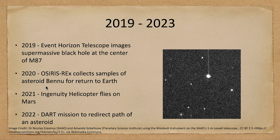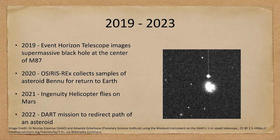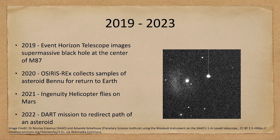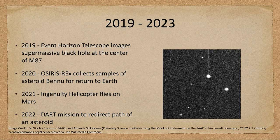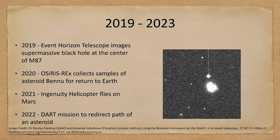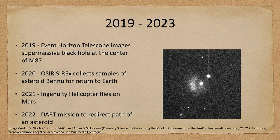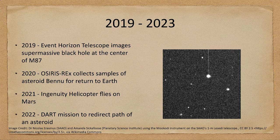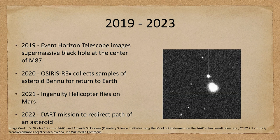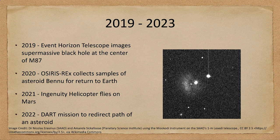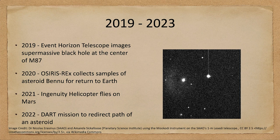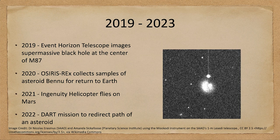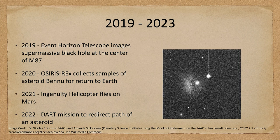In 2022, we had the DART mission — an impact on the satellite of an asteroid to try to change its path. This was considered a planetary defense mission: could we actually change an asteroid's orbit? It was found that the impact of a spacecraft changed the orbit by about half an hour, suggesting that in the future we might be able to redirect an asteroid heading toward Earth.